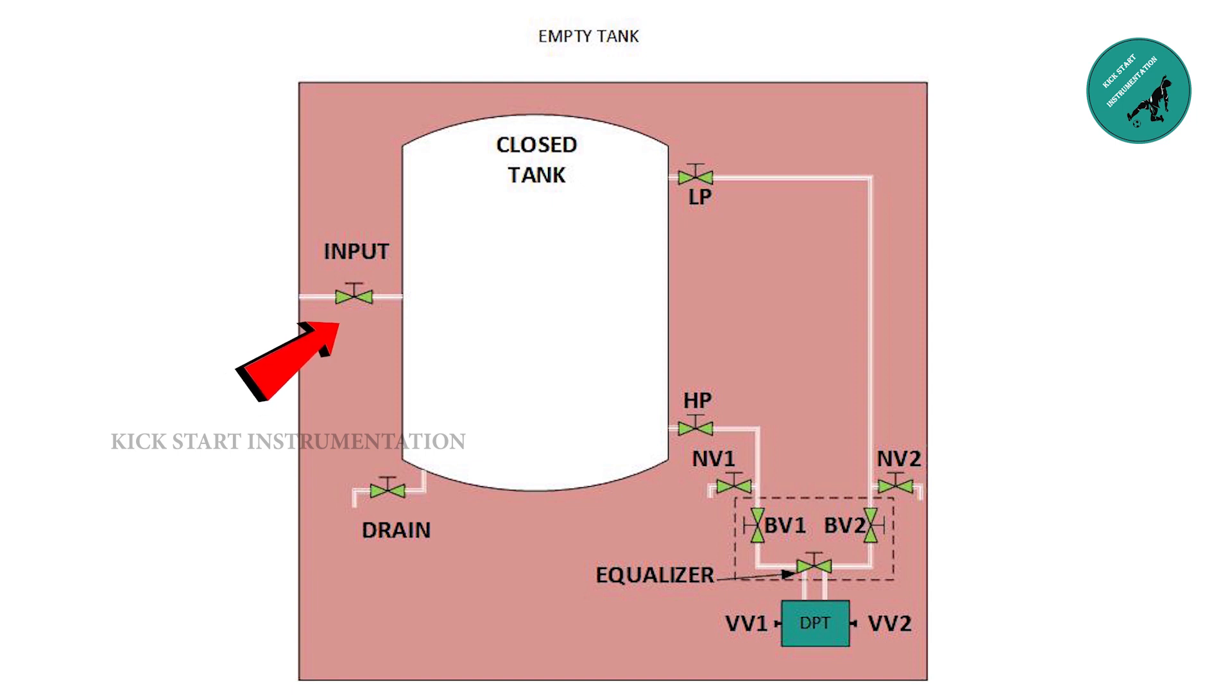This is input valve, which is used to fill the water into the tank. This is drain valve, which is used to drain the water from the tank. This is low pressure valve, which supplies process into low pressure side of differential pressure transmitter. This is high pressure valve, which supplies process into high pressure side of differential pressure transmitter.